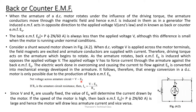The net voltage across the armature circuit equals V minus Eb. If Ra is the armature circuit resistance, then Ia × Ra = V − Eb, so Ia = (V − Eb) / Ra. Since V and Ra are usually fixed, the value of Eb will determine the current drawn by the motor. If the speed of the motor is high, the back EMF Eb is large and hence the motor will draw less armature current, and vice versa.